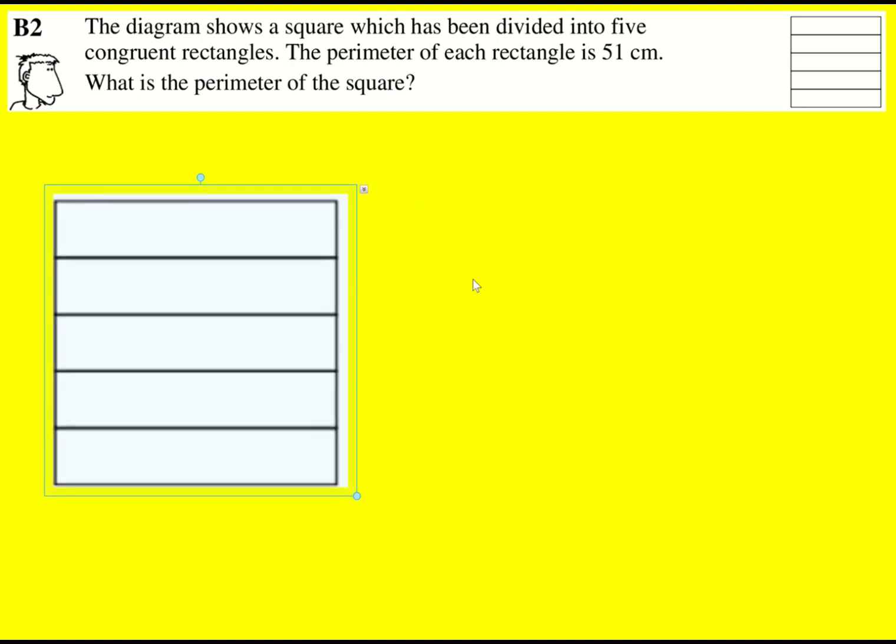We're given a square divided into five congruent rectangles. Let me just focus on a rectangle for a second, just one of them. I'm going to say that this length is x and then this length is y. So we've got y here and x here as well.